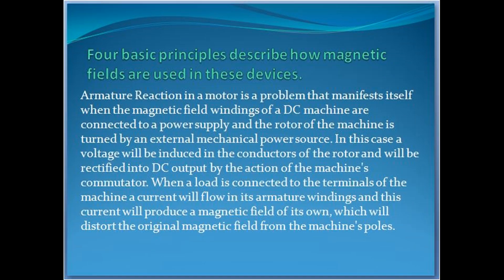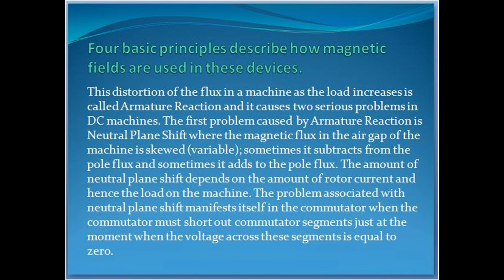Parasitic problems exist in all electric motors, including motor armature reaction generator action in a motor, which causes undesired effects such as neutral plane shift, flux weakening, and required solution interventions such as interpoles and compensating windings, which add to the complexity and cost of electric motors but do not completely solve the problematic issues. Armature reaction in a motor manifests when the magnetic field windings of a DC machine are connected to a power supply and the rotor is turned by an external mechanical power source. In this case a voltage will be induced in the conductors of the rotor and will be rectified into DC output by the action of the machine's commutator. When a load is connected to the terminals of the machine, a current will flow in its armature windings and this current will produce a magnetic field of its own, which will distort the original magnetic field from the machine's poles.